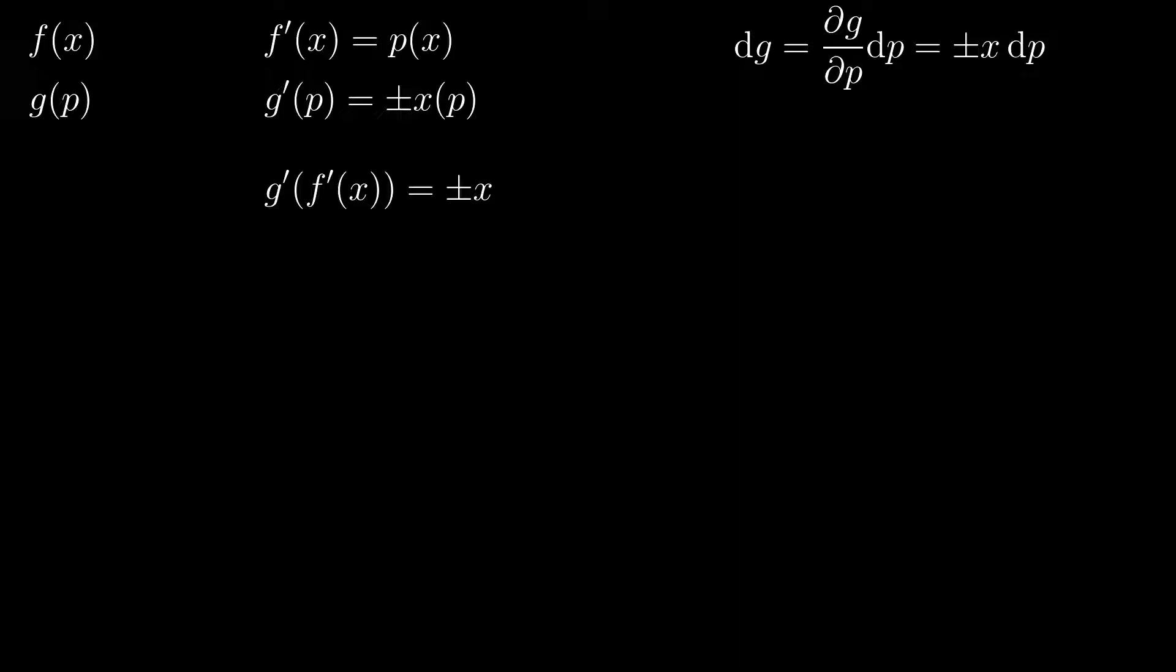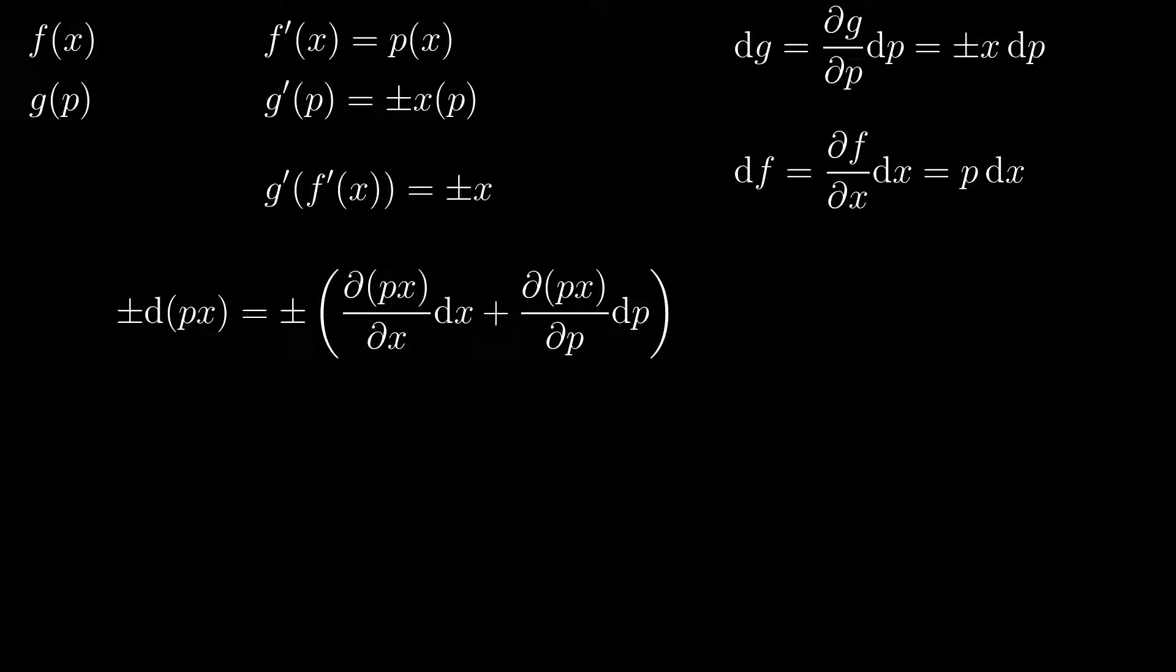We start by taking the total differential of g, which happens to be plus minus x dp, and the total differential of f, which happens to be p dx. Now we take the term p times x, and compute its total differential. And note that I put a plus minus sign in front, just so that we'll get both variants of the transformation with a single calculation.